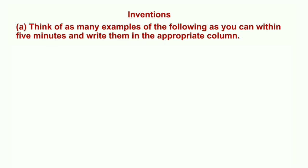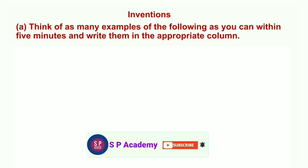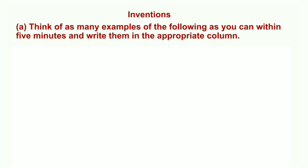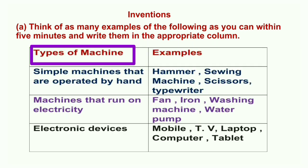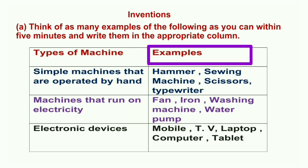Next question — Inventions: Think of as many examples of the following as you can within five minutes and write them in the appropriate column. Different types of machines are given; find as many examples as possible for each type and fill in the table.